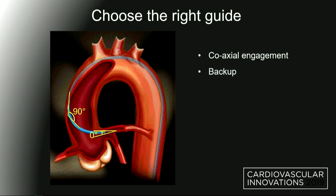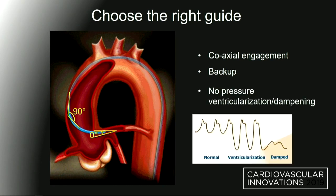You want to have backup, especially for a complex case. You want the guide to rest against either the aortic wall or the coronary cusp with an angle that's closer to 90 degrees. And you want to achieve all that without any pressure, ventricularization, or dampening. You don't want to create any injury at the site of the engagement.